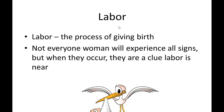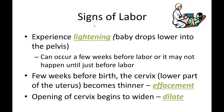The process of giving birth is called labor. The signs of labor include lightening — where the baby drops lower into the pelvis a few weeks before delivery. The cervix, the lower part of the uterus, becomes thinner; this is called effacement. The third sign is dilatation — the opening of the cervix begins to widen.